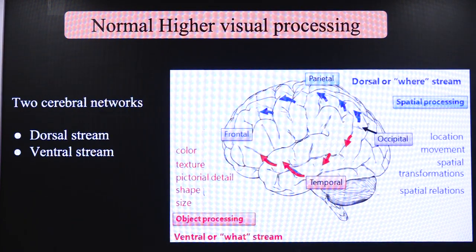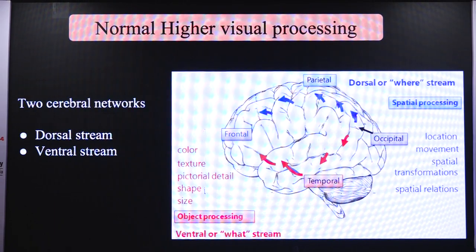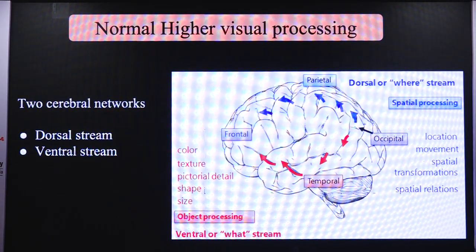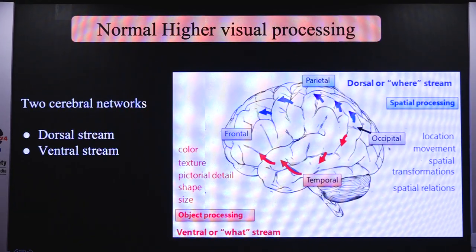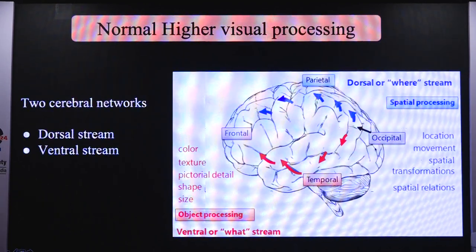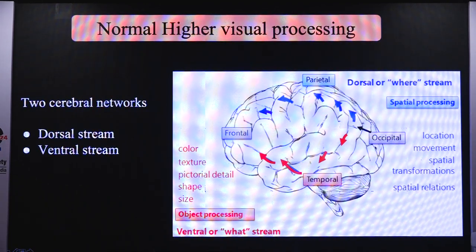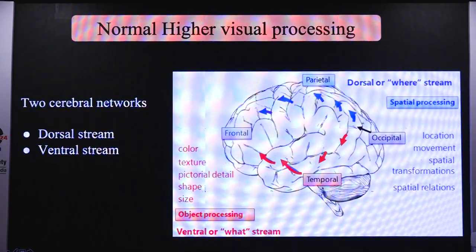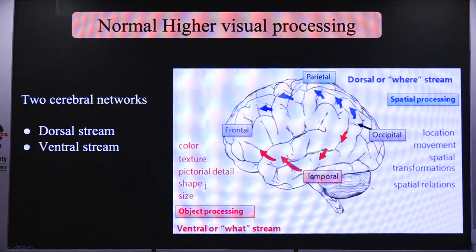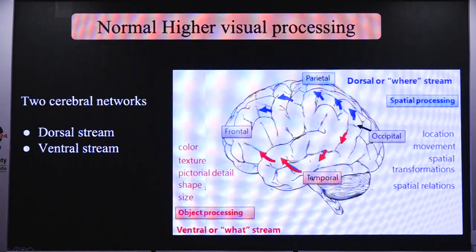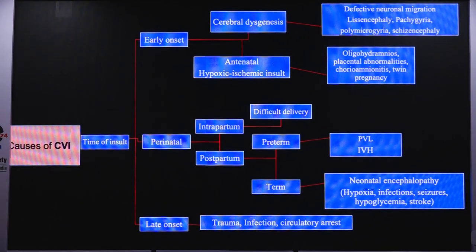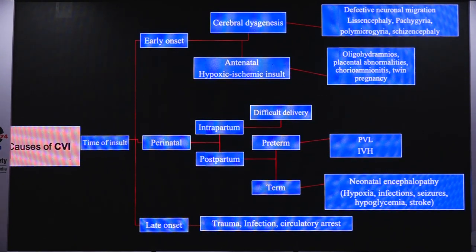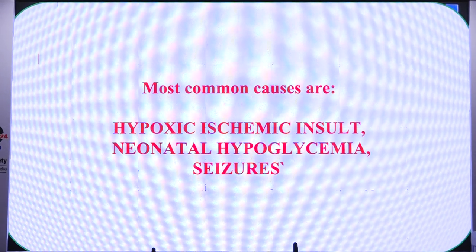As Dr. Asmita pointed out, the most common causes of CVI are hypoxic ischemic insult, neonatal hypoglycemia, and seizures. Abnormal visually guided behaviours or higher visual function deficits include visual field preference, latency, attraction towards movements, absence of visually guided reach, light gazing, colour preference such as red, and sometimes difficulty in a complex visual scene — called simultagnosia.